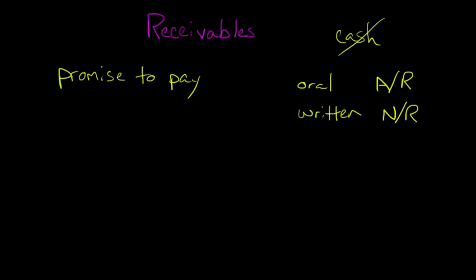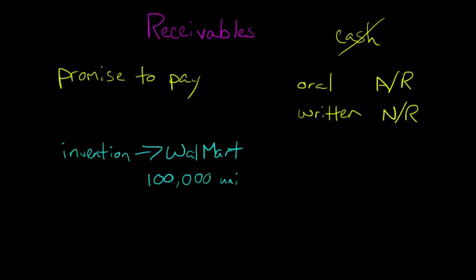A common example would be: let's say you come up with an invention, and you sell it to Walmart. They want 100,000 units, but they're not necessarily going to give you cash the day they make the order. You send them a bill, and then they'll pay you in 30 days or 60 days or something like that. Until you get that cash for these 100,000 units, you have an account receivable with Walmart as your customer.